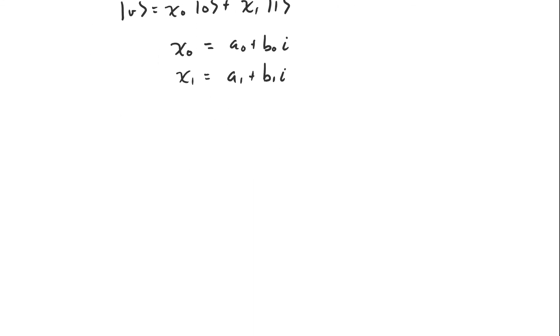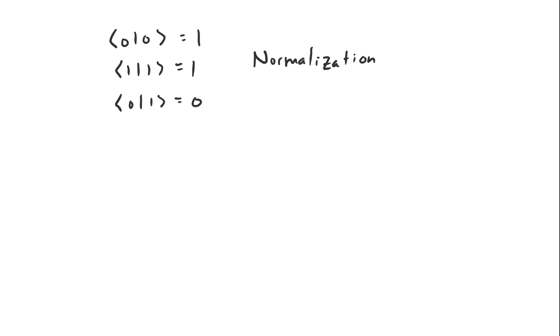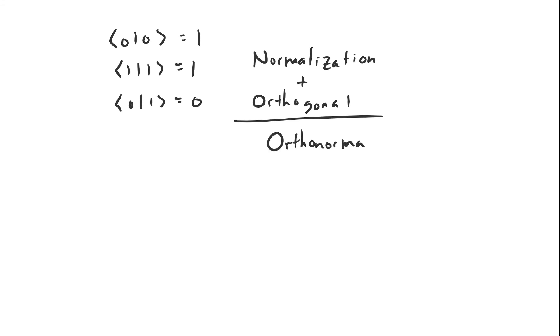So let's define an inner product over this vector space. Let's define the inner product of |0⟩ with itself to be one, and the inner product of |1⟩ with itself to also be one — this is called normalization; a vector is normalized if its inner product with itself is one. And let's make the inner product of |0⟩ with |1⟩ equal to zero. If the inner product of two vectors is zero we say they are orthogonal, and if two vectors are both normalized and orthogonal we say they are orthonormal. So |0⟩ and |1⟩ are orthonormal.